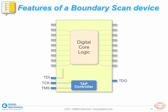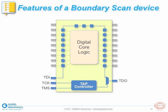The TClock and TMS signals control a 16-state state machine — the so-called TAP controller — which manages various test registers included in an IEEE 1149.1 compliant device. Boundary scan cells, inserted in the path between digital I/O pins and the digital core logic, are linked to a boundary scan register. The length of the boundary scan register depends on the number of I/O pins and the types of boundary scan cells.